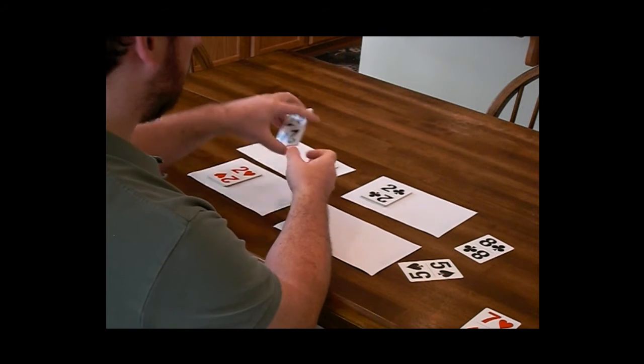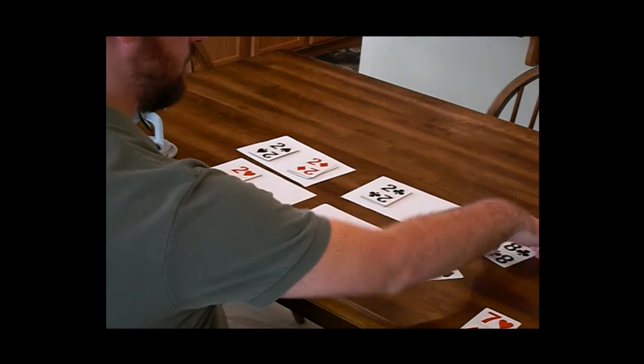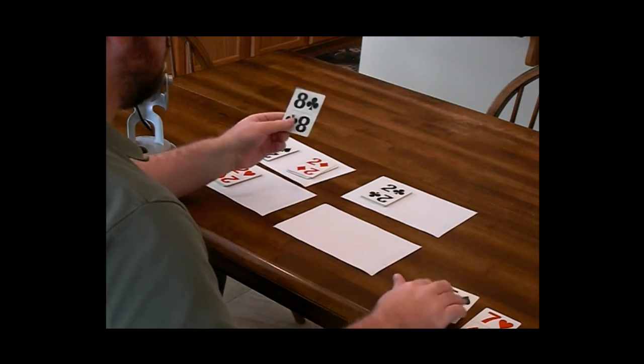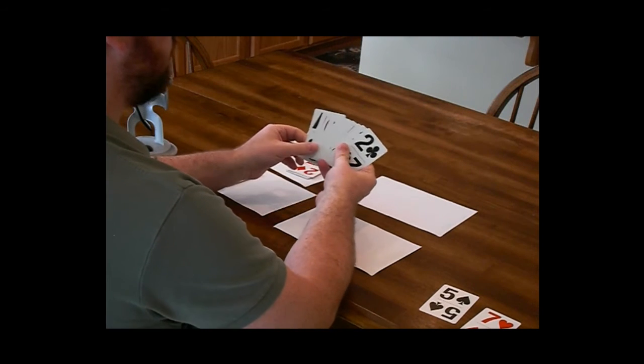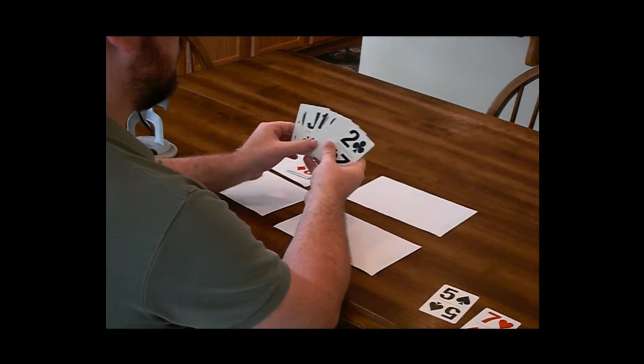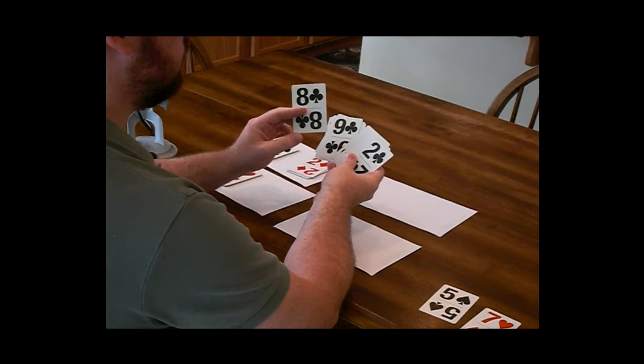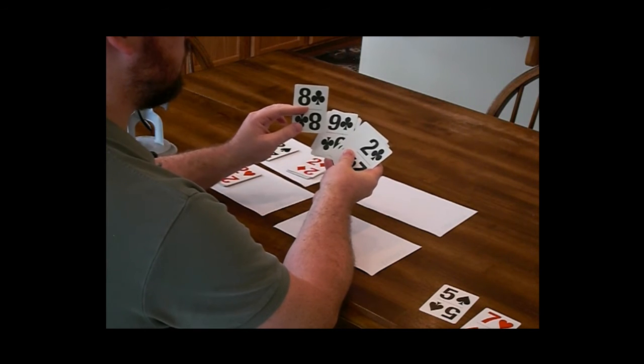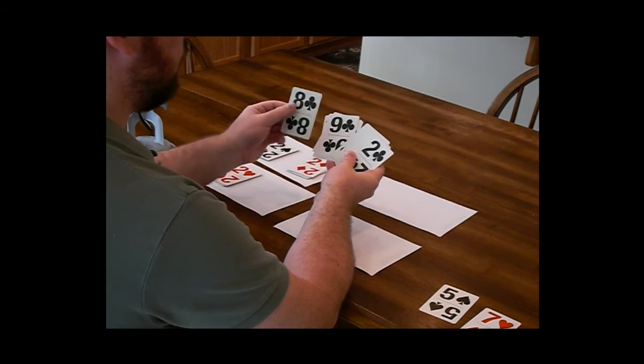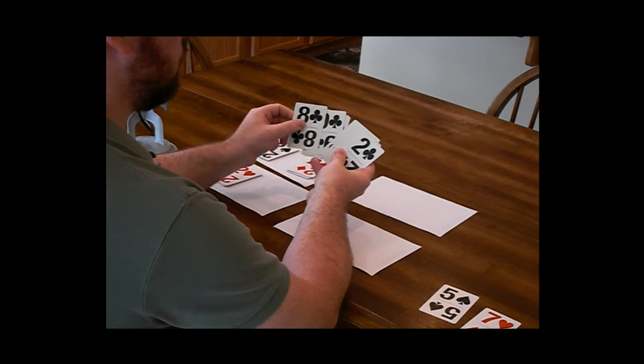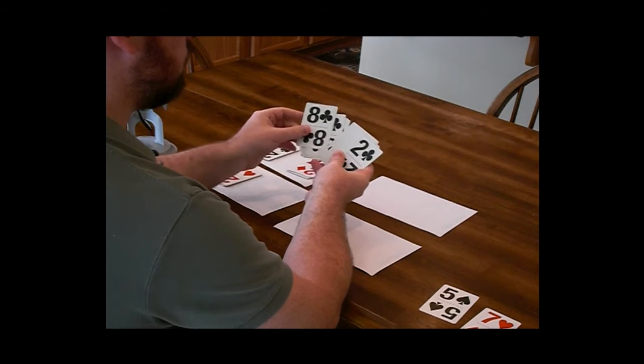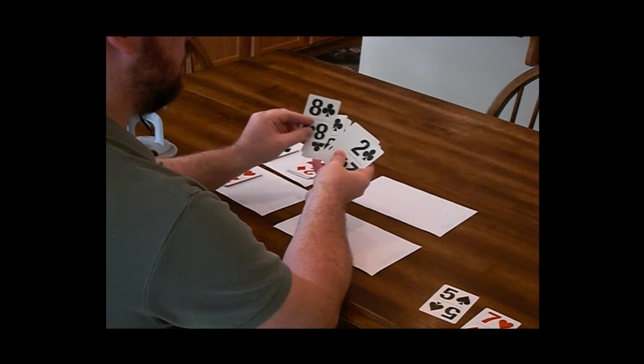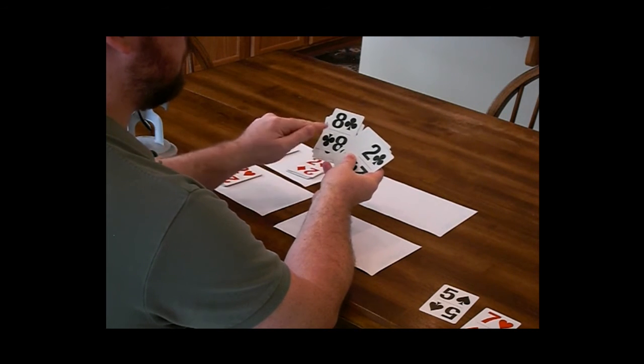Here let's do it again. So here I'm going to take the eight of clubs and I want to insert that data. One of the interesting things about HBase is there's really no inserts per se in the sense that we think of them in relational databases. You would think of this more as an upsert. So if there was already data here that was an eight of clubs, what would happen was the data would go on top of that. It would be a brand new version.